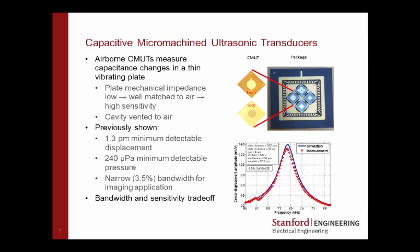We do that with airborne CMUTs. Now CMUT measures capacitance changes on a thin vibrating plate. That plate has a very low mechanical impedance which makes it well matched to air and gives us very high sensitivity. The devices we use shown here in the top right mounted into a package that we use in our system are vented to air through the substrate which also uses some squeeze film damping effects that increase the bandwidth to make it a little more useful for imaging as opposed to simple detection.